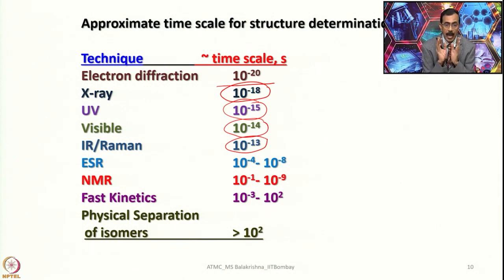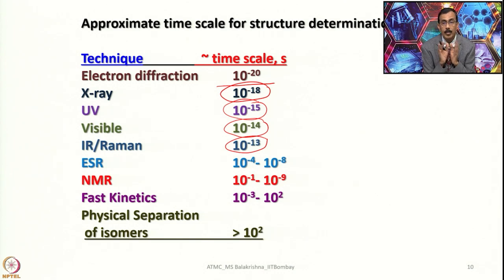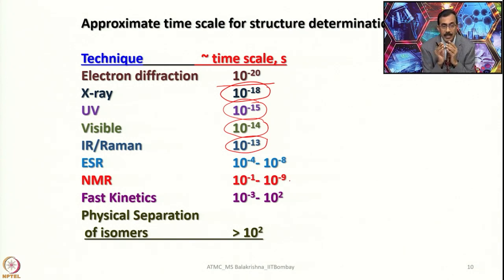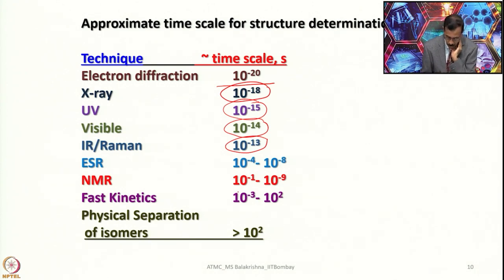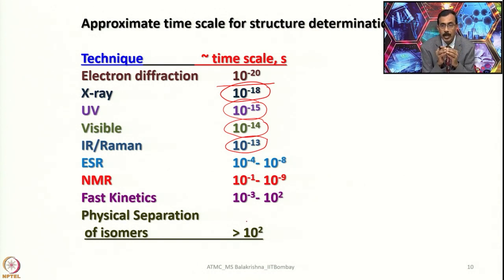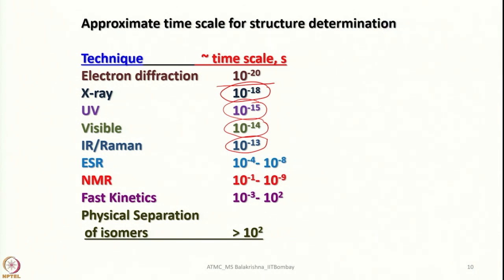Whatever dynamic process happens in the time scale of 10⁻¹ to 10⁻⁹ seconds can be identified by NMR. If the process is slower than 10⁻¹ or faster than 10⁻⁹, then NMR fails to give any insight into those dynamics happening in solution. Fast kinetics span 10⁻³ to 10² seconds, and for physical separation, if a sample is stable for more than 100 seconds one can visually look at it — even hand-picking under a microscope can be done if morphologies differ.